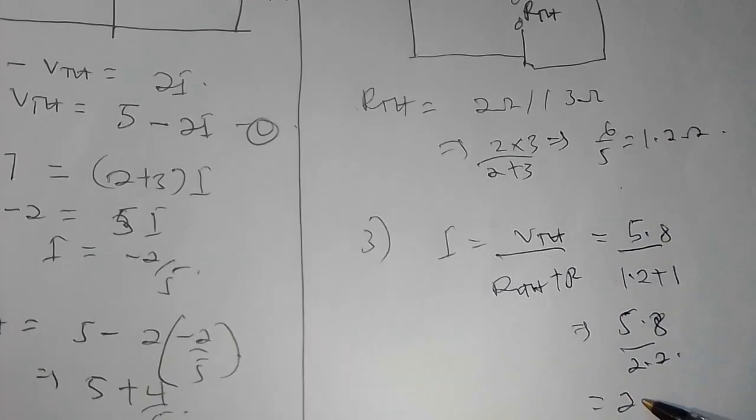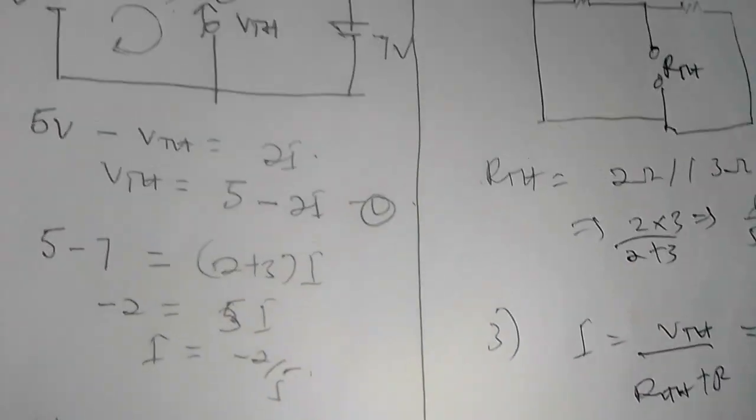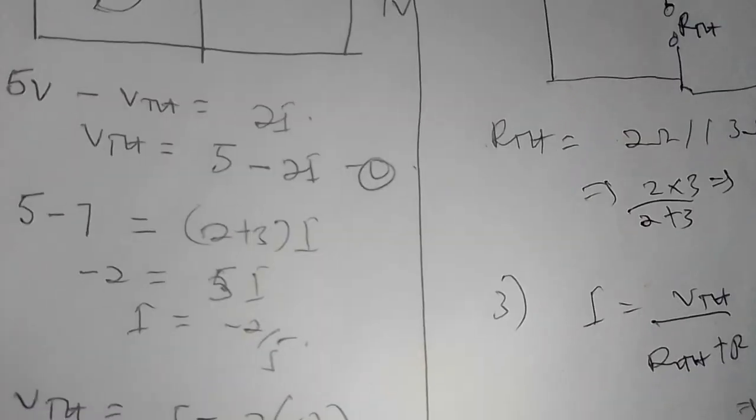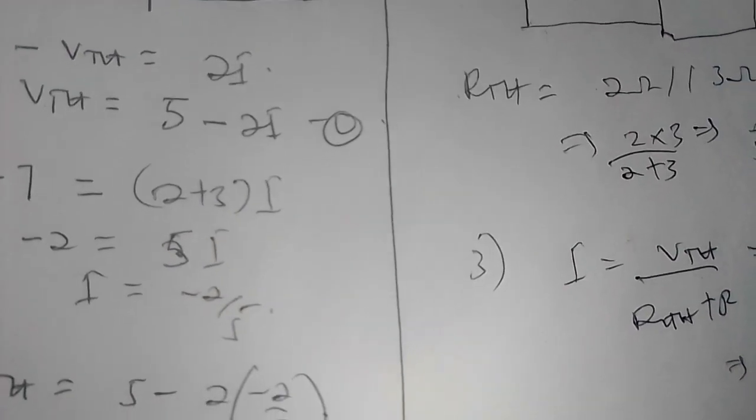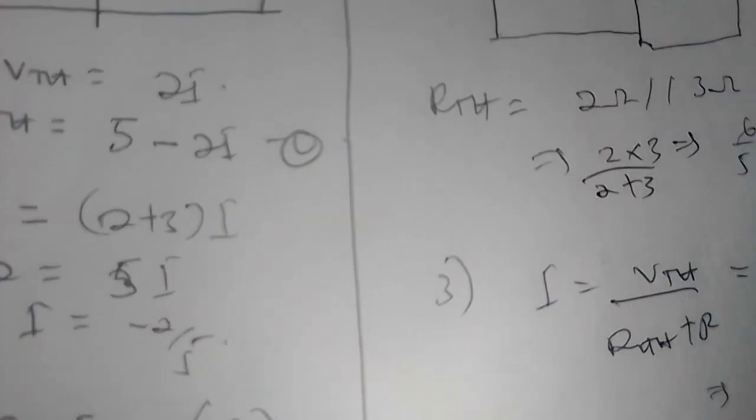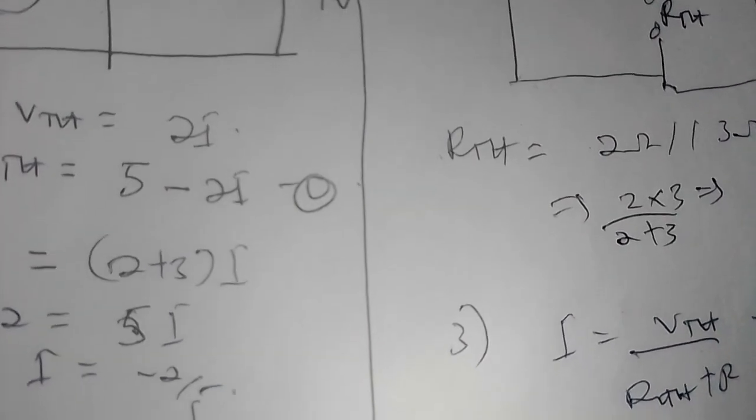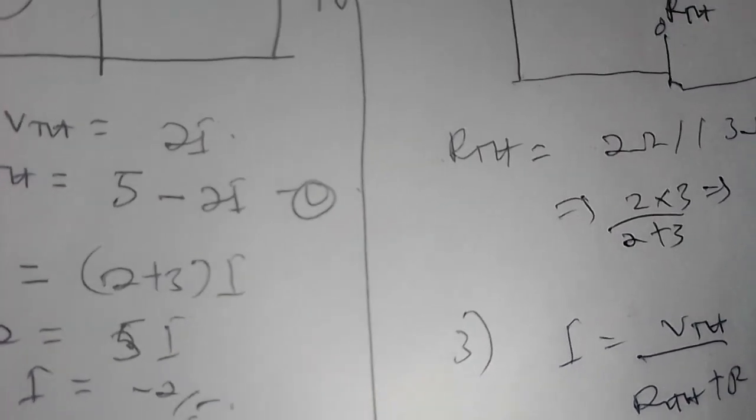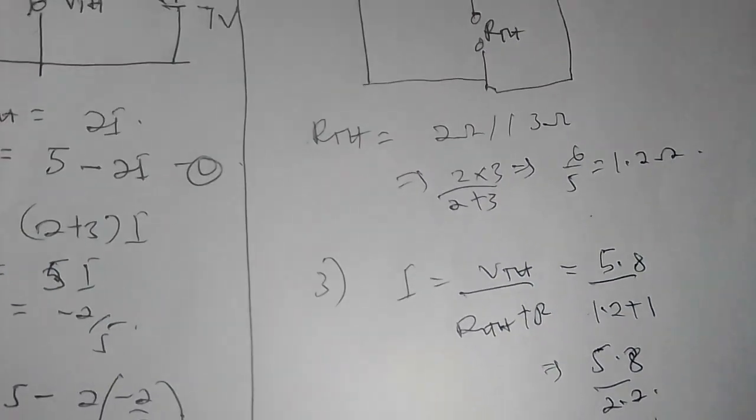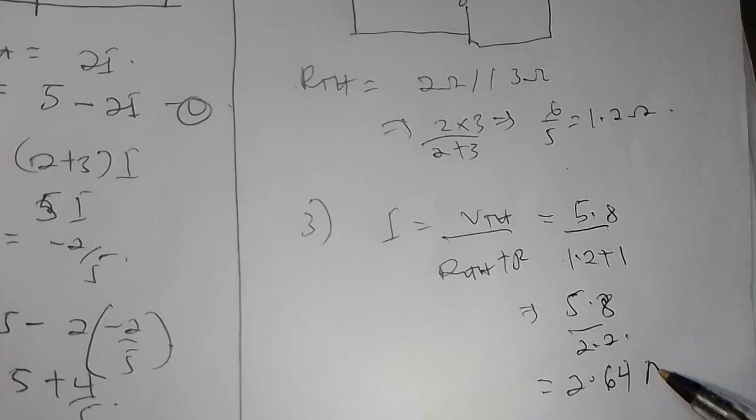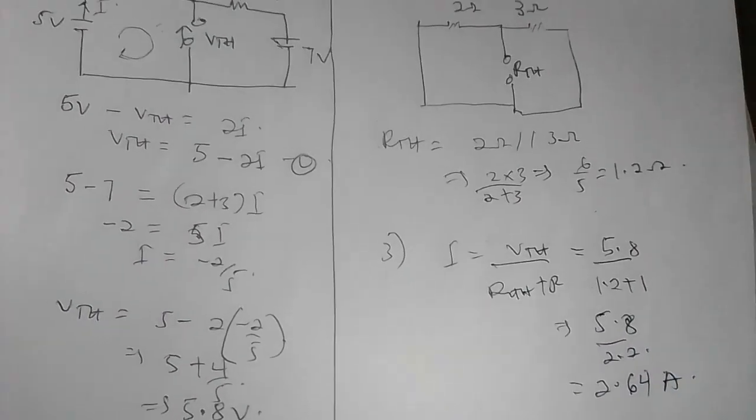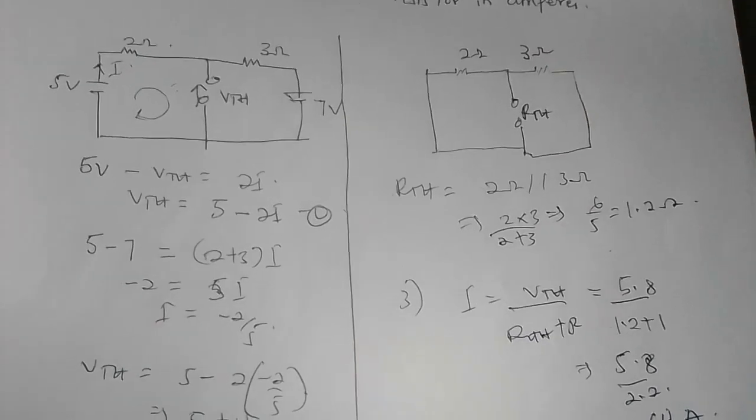So 5.8 over 2.2 gives 2.64 amperes, and that is the end of this video. Please subscribe and don't forget to like. Thanks for watching.